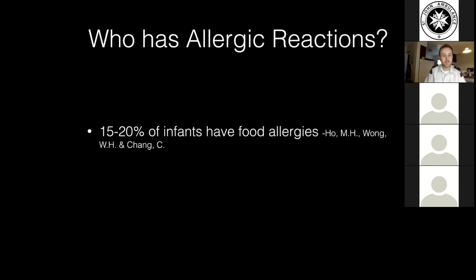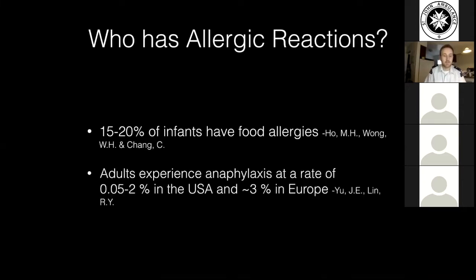I couldn't find a really concrete number for adults for plain allergic reactions, but for anaphylaxis there's a significant difference — anywhere between about 0.05 and 2 percent of adults in the USA can experience an anaphylactic reaction in their lifetime, while it's as high as 3 percent in Europe. I couldn't find a great explanation for why there's such a broad difference there, but it's quite interesting. Just a quick reminder — food allergies is a much broader category than anaphylactic reaction, so these numbers aren't comparable.